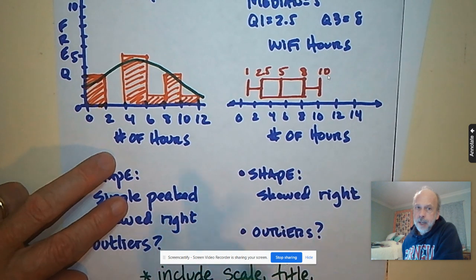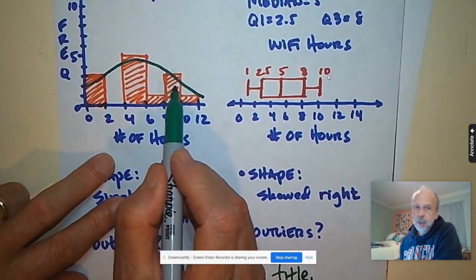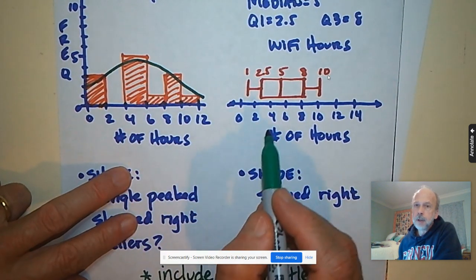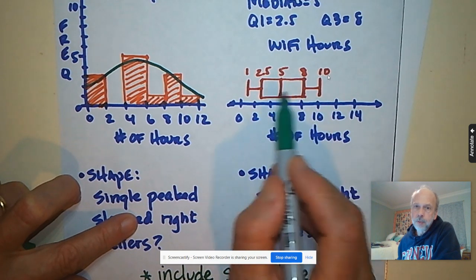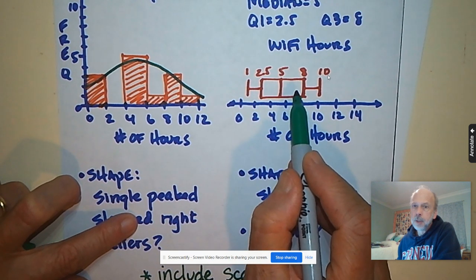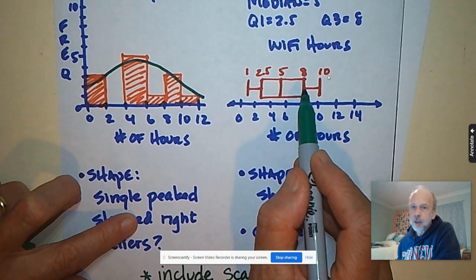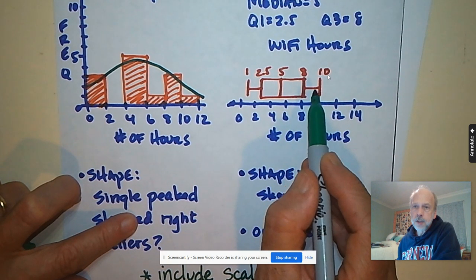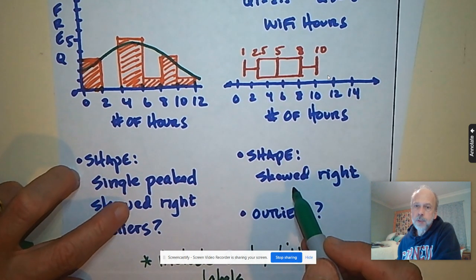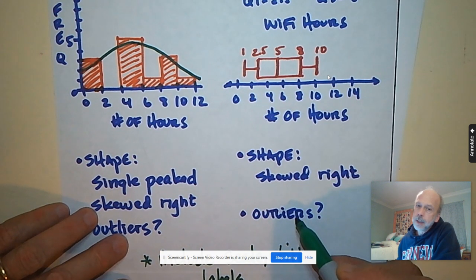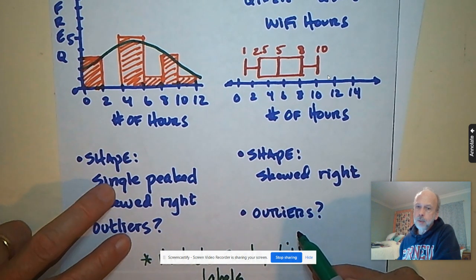When I look at this, I can't really say much about peaks, double peak, that kind of thing. But I can tell if one side is pulled to the right or to the left a little bit. Here, this side of the box is leaning more towards the right. It's stretched out that way. So I would still want to say skewed right. And again, I don't think my data has any outliers.